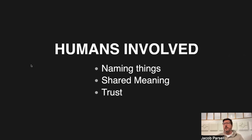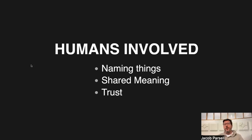Once we get humans involved in working with data or state, some of the big issues we run into are: what do we name things? It's cliche in development — two hard problems are naming things and cache invalidation. We'll get into some of the reasons why naming things is hard, and shared meanings along those lines too: even if we come up with good names, do we agree that name means the same thing?